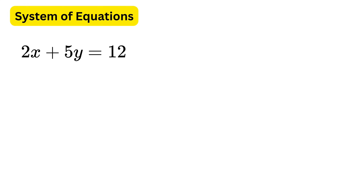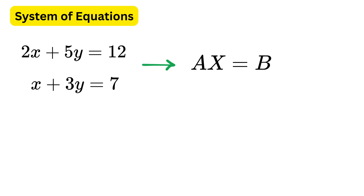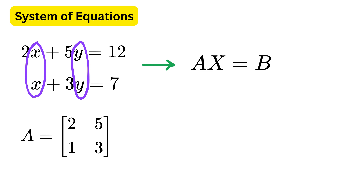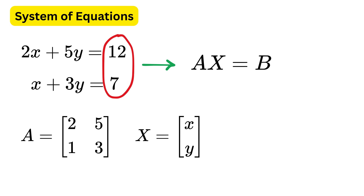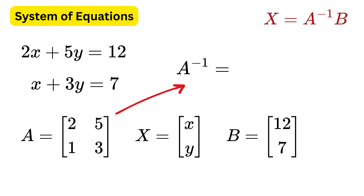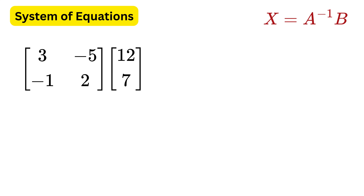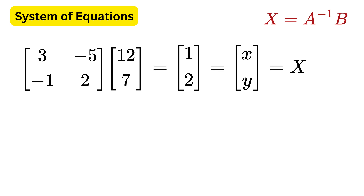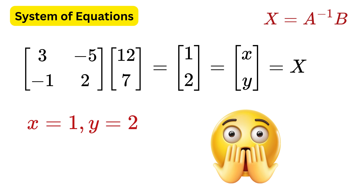Now, see the magic. Suppose we have a system of two equations and we need to solve for x and y. We can turn this system into matrix form A times x equals b, where A is the coefficient matrix, x is the variable matrix, and b is the constant matrix. To solve for x, we use x equals A inverse times b. We already found the inverse of A, so we multiply it with the B matrix. After multiplication, the solution is x equals 1 and y equals 2.